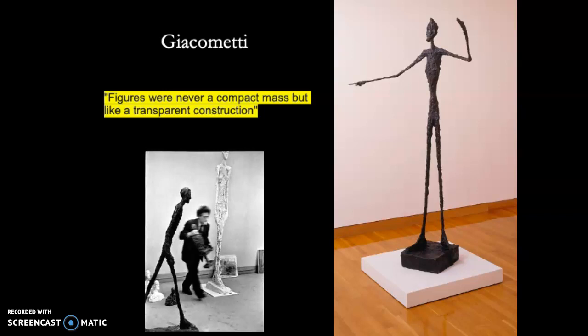Giacometti's fingerprints are visible in all his sculptures — he does not try to smooth things out. So his work is very easy to spot, particularly the post-World War II pieces. He was very influential with these humans kind of shrinking in space. He said figures were never a compact mass but like a transparent construction. There's actually a really good movie on him — he's kind of an interesting person.